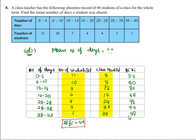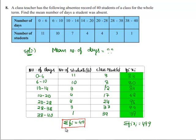And if we find the sum of all this fi and xi, we get Σfi×xi. We get Σfi×xi is equal to 499. As we got Σfi is equal to 40 and Σfi×xi is equal to 499.